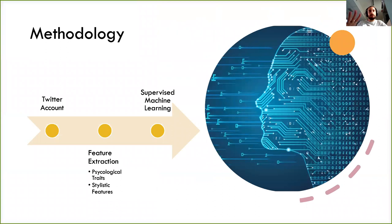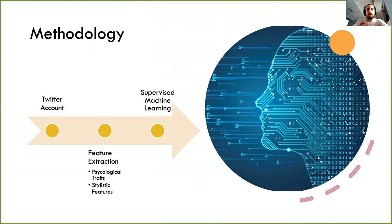The methodology we use can be summarized in a simple three-step pipeline. Given a Twitter account and its tweets, we extract a set of features containing both psychological traits and stylistic features, and then we use simple supervised machine learning techniques to classify whether a Twitter account is a spreader or a legitimate account.